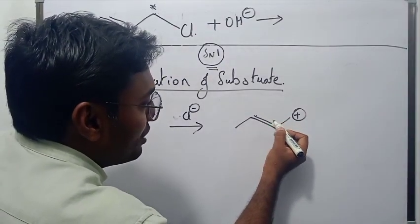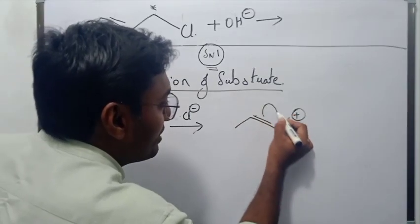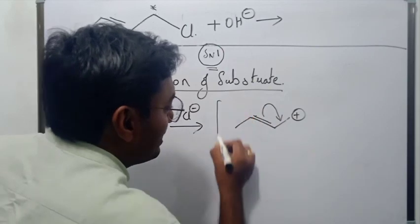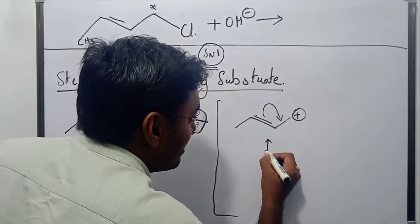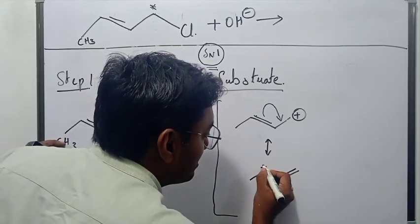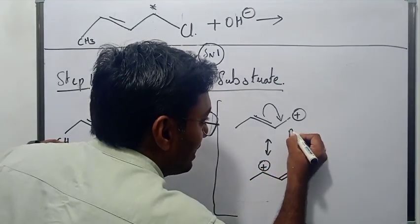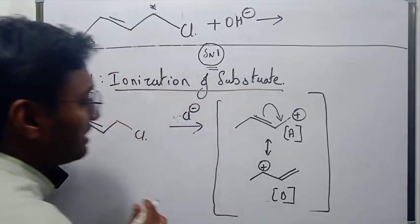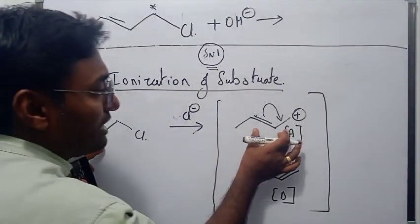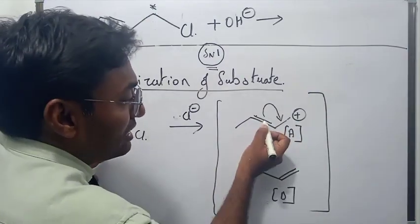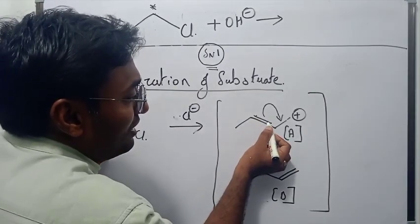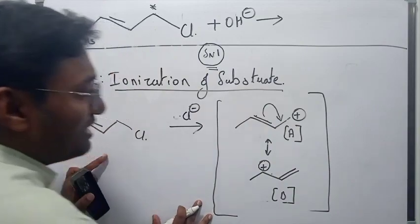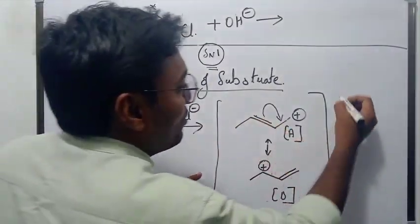Now this pi electron pair from the adjacent C=C bond jumps toward the carbocation to negate the positive charge. This gives us a second carbocation — carbocation B — where the positive charge has moved to the other carbon atom and the double bond has shifted. What we are seeing is that the intermediate carbocation undergoes rearrangement: rearrangement of the double bond to the allylic carbon atom. This rearrangement is called allylic rearrangement.